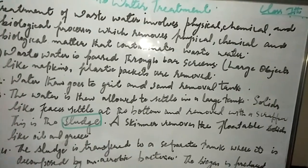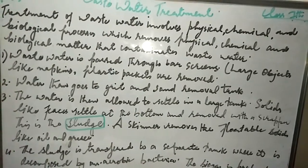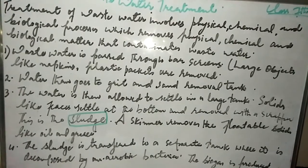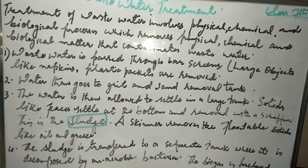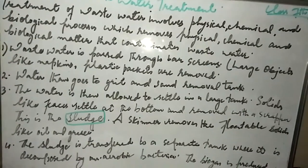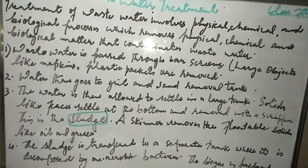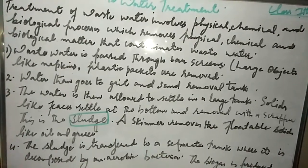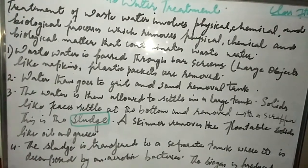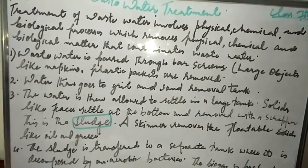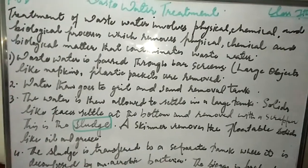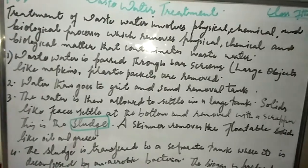In the third step, water is placed in a big tank. Solids like feces are present and settle at the bottom. A scraper is used — the scraper removes the solid feces from the bottom, which forms sludge.